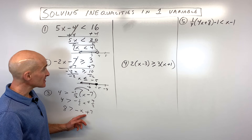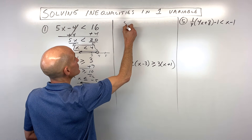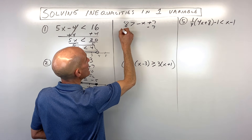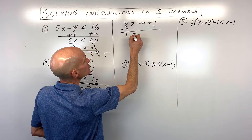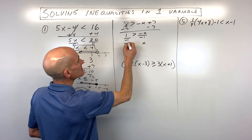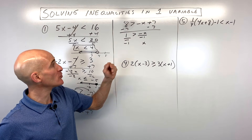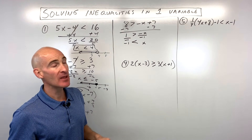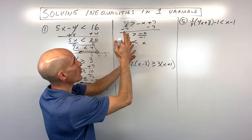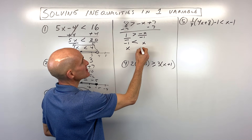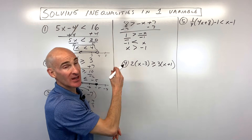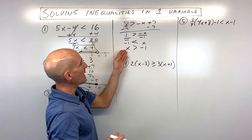We have 8 is greater than negative x plus 7. I'm going to subtract 7 from both sides, so that's 1 is greater than negative x. I'm going to get the x by itself by dividing both sides by negative 1 — but look what just happened: I divided both sides by a negative number, so this inequality changes direction. We also have the variable on the right, and we want it on the left, so I'm going to flip the whole inequality over to get x is greater than negative 1.